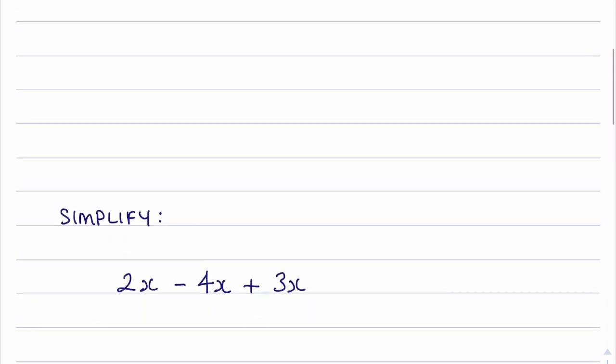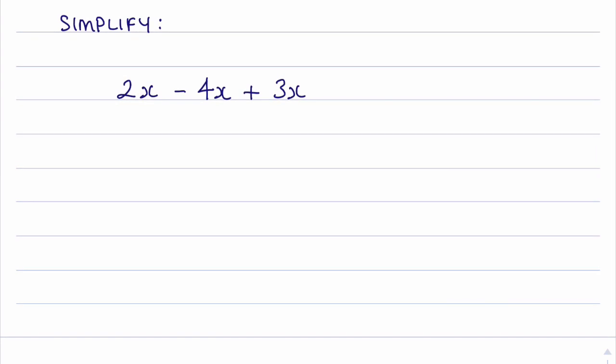Let's have a look at another one. In this one we have to simplify some x terms. So 2x subtract 4x would be negative 2x, and then adding 3x would give me 1x. Now in algebra we don't write the 1, we simply write x.